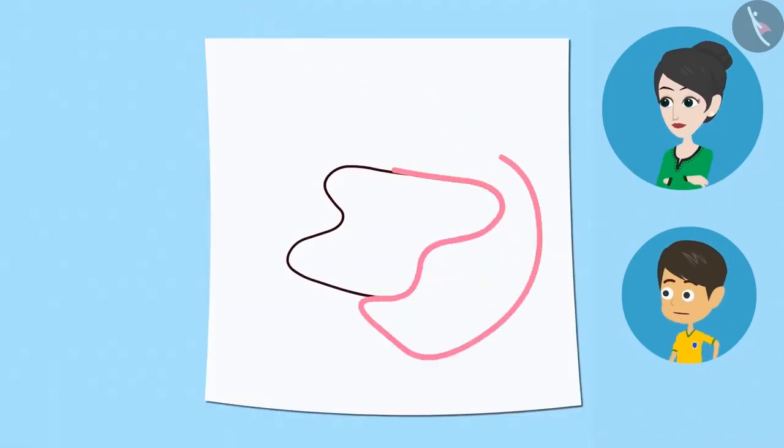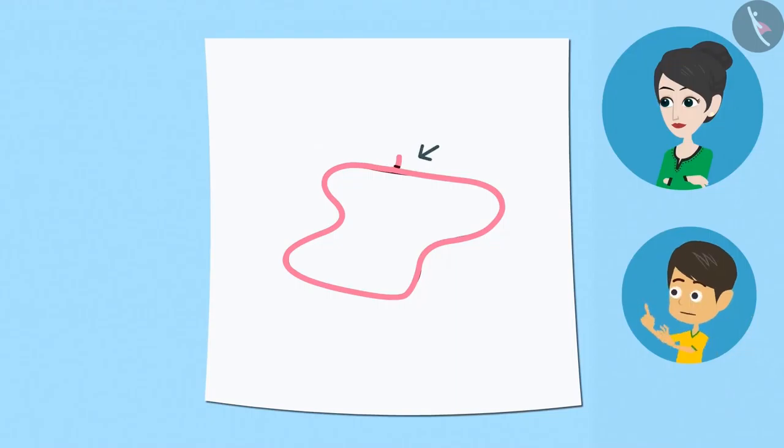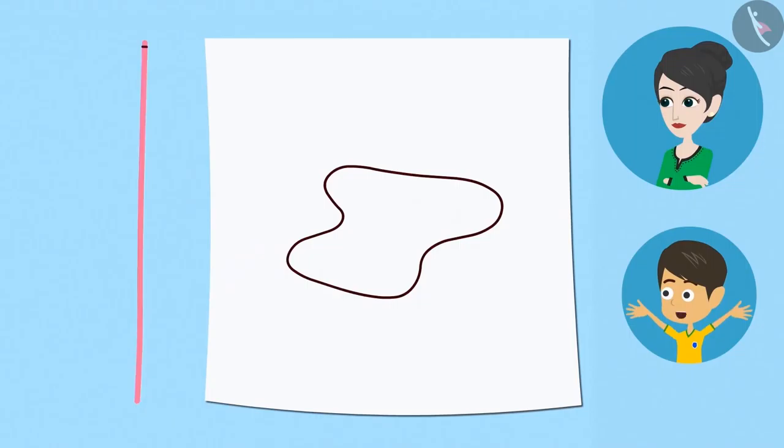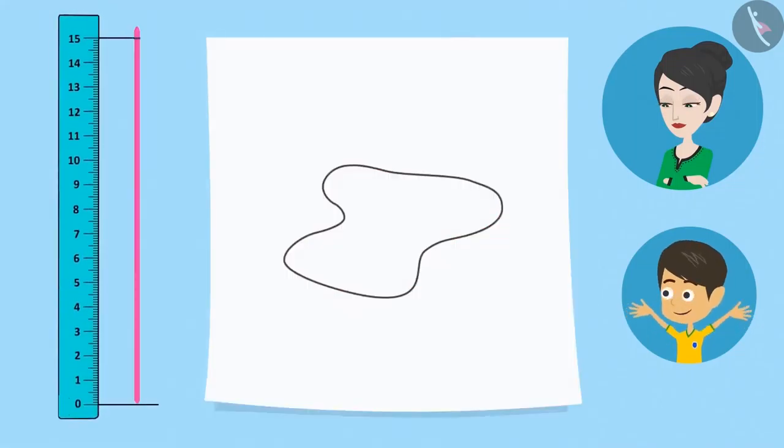I place a thread on the boundary and then mark this thread where it is meeting the starting point. Now, I keep this thread straight and measure it with a scale.